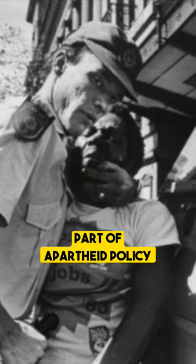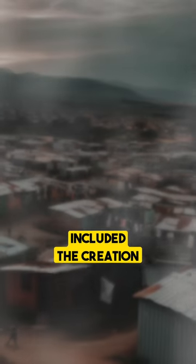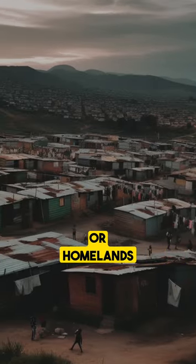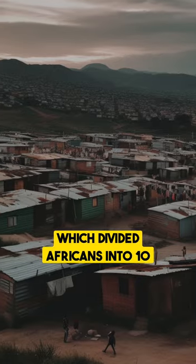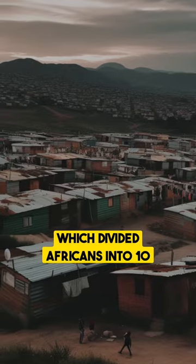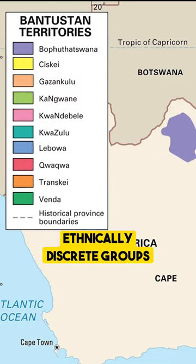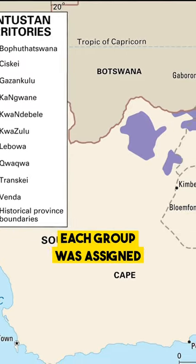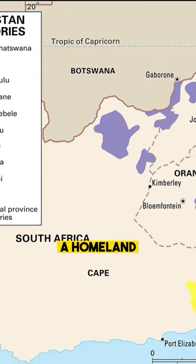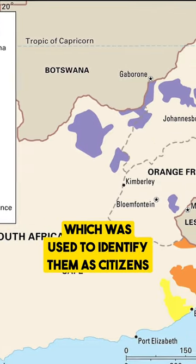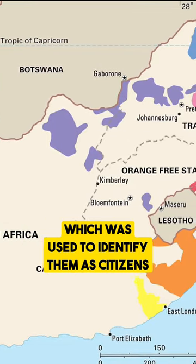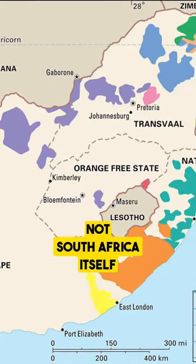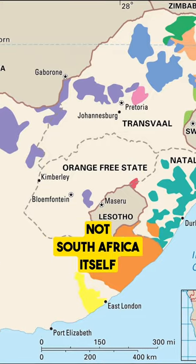Part of apartheid policy included the creation of bantustans, or homelands, which divided Africans into 10 ethnically discrete groups. Each group was assigned a homeland, which was used to identify them as citizens of that homeland, not South Africa itself.